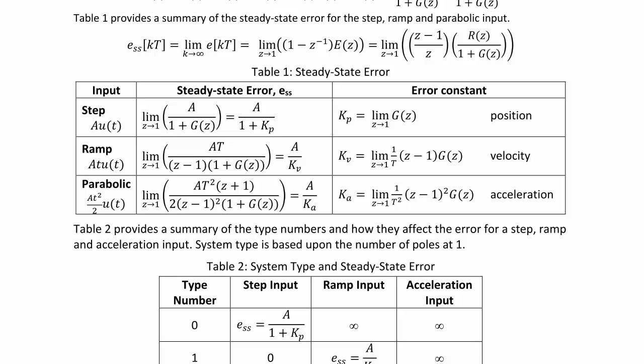Table 1 provides a summary of the steady state error for step, ramp, and parabolic inputs. For the step A·U(t), the steady state error is A over 1 plus KP, where KP is the position error constant — the limit as Z goes to 1 of G(Z).